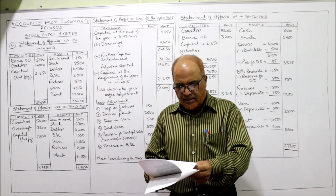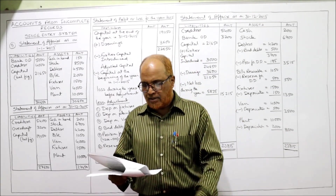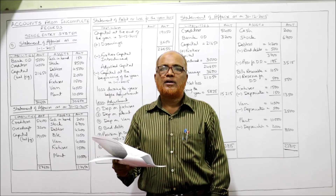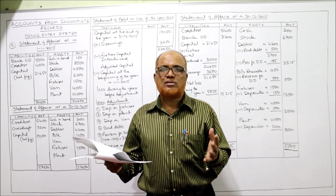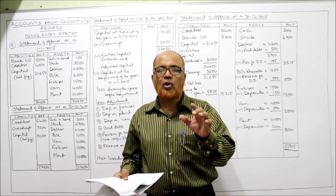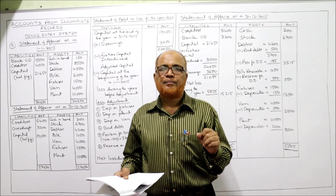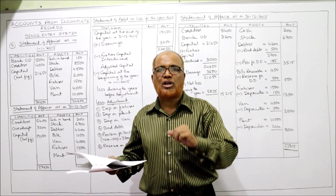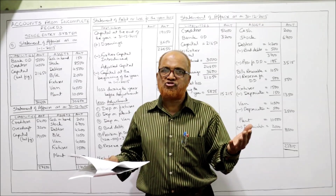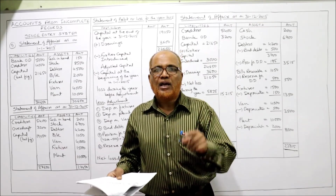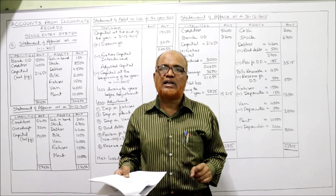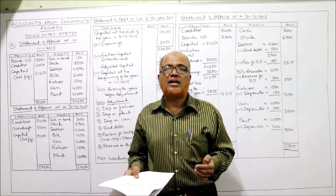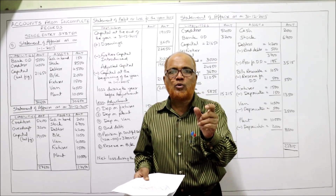The fifth problem: Hari keeps his books on single entry method. You are required to ascertain the profit or loss made by him in the year 2015. Accounts from incomplete records does not follow the double entry accounting system. In double entry, every debit has a corresponding credit; systematic ledger and journal are maintained, and we can prepare trial balance and final accounts.